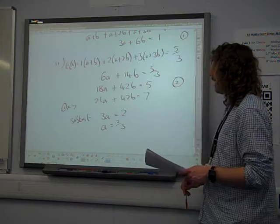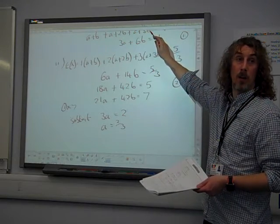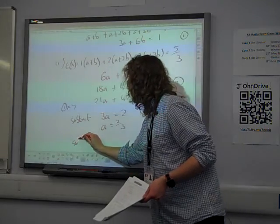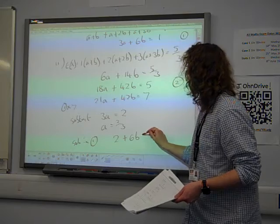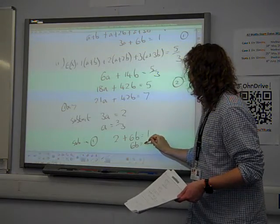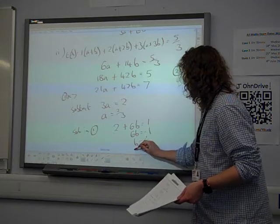Which if I sub back into one of the original equations, well, into that one, it seems sensible. Sub that back in to equation 1. 3 times 2 thirds is 2. Plus 6b is 1. 6b is minus 1. So b is minus 1/6.